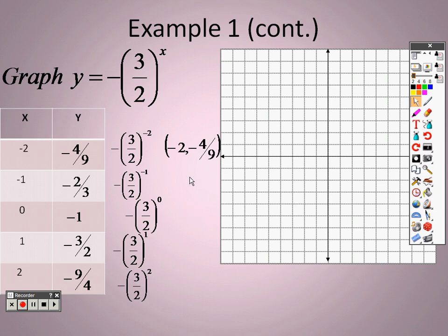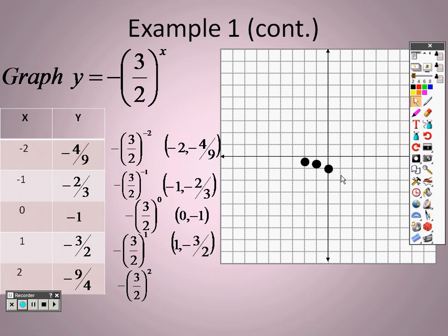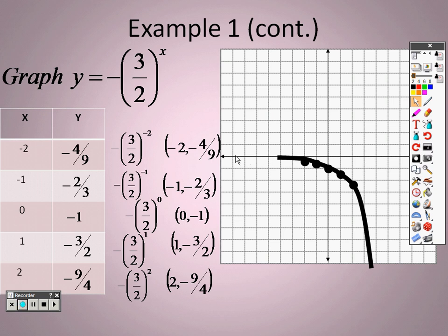So when I go to plot these: negative 2 and negative 4 ninths means I go over negative 2 and down about a half. Next, negative 1 means I go over negative 1 and down about negative 2 thirds. Then I go over nothing and down negative 1. Then over 1 and down 1.5. Then over 2 and down 2.25, and I connect them and draw a line. The horizontal asymptote is y equals 0 — notice how it goes really close to 0 but never quite touches it.